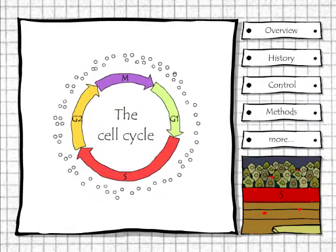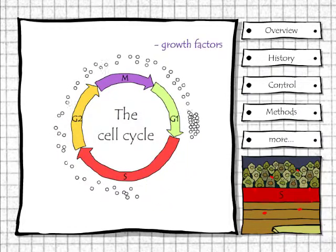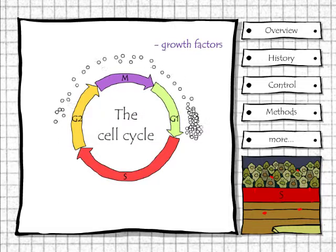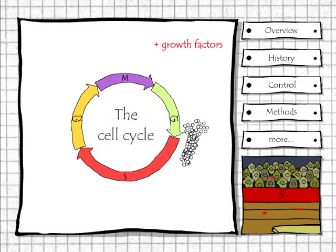Well, you have to synchronize them. You can do this by deprivation of nutrients and growth factors. So they will all stop in G1 phase and accumulate, waiting for nutrition. Once you feed them, they will carry on together for a new round.